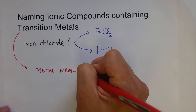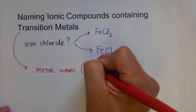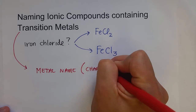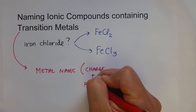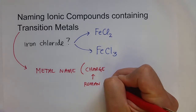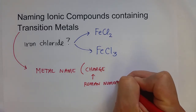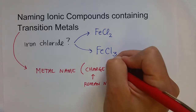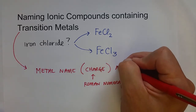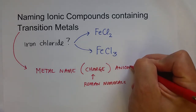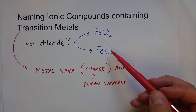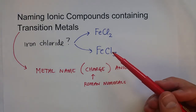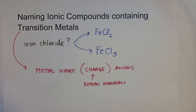For naming ionic compounds that contain transition metals, we use this mechanism: the metal name, then in parentheses the charge for that metal using Roman numerals, and then the anion's name. If the anion is an element, we use the -ide name like chloride; if it's a polyatomic ion, we use the polyatomic ion's name.